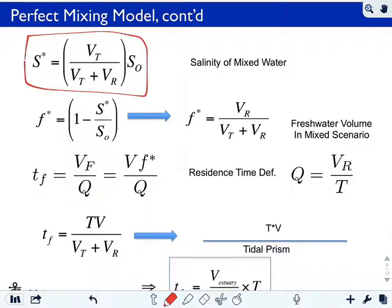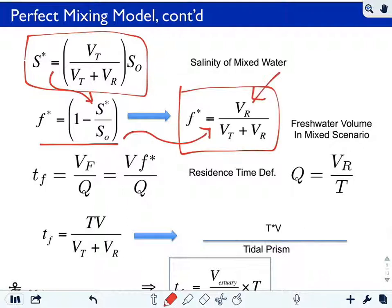And now recall, the fresh water fraction is defined as this, so I can substitute this into here and rearrange that, and I end up with this quantity here. The fresh water fraction expressed as the river discharge over a tidal cycle, divided by the amount of volume coming in from the open ocean over a tidal cycle due to the tidal forcing, plus again that VR again.